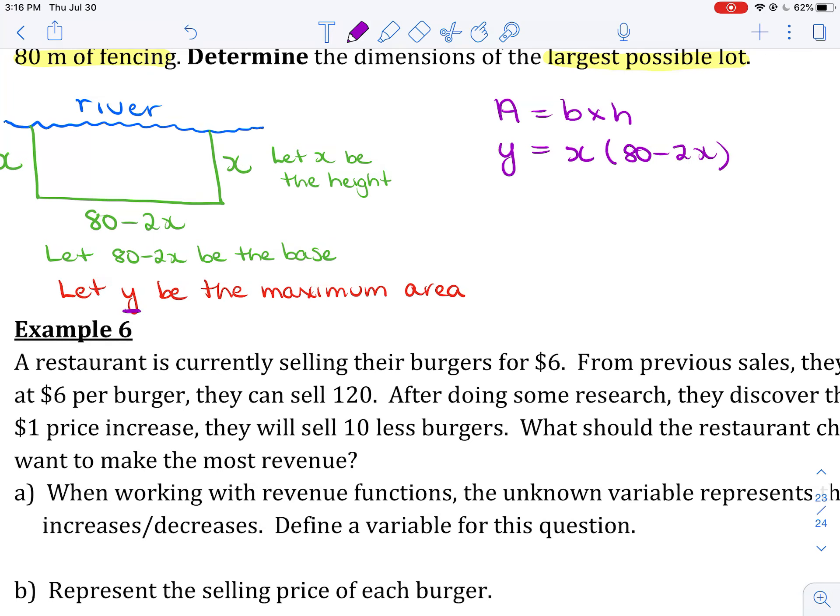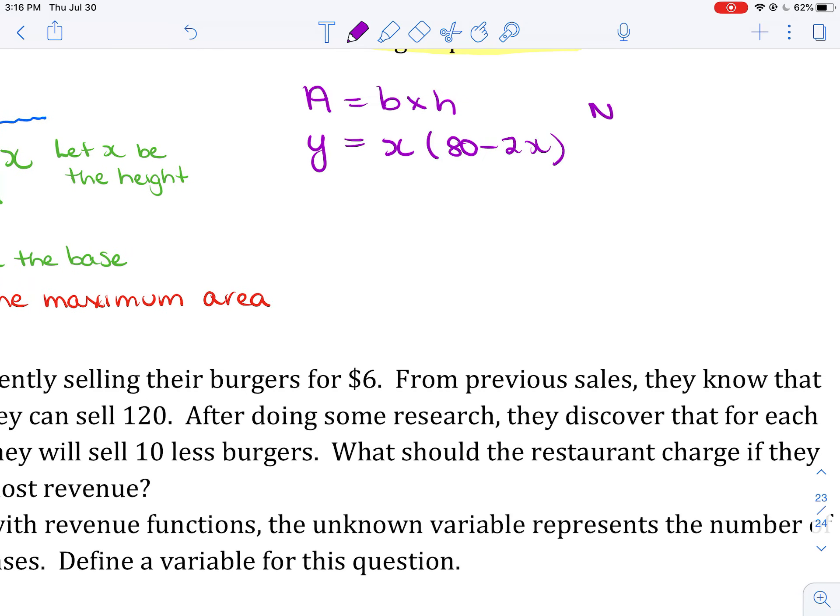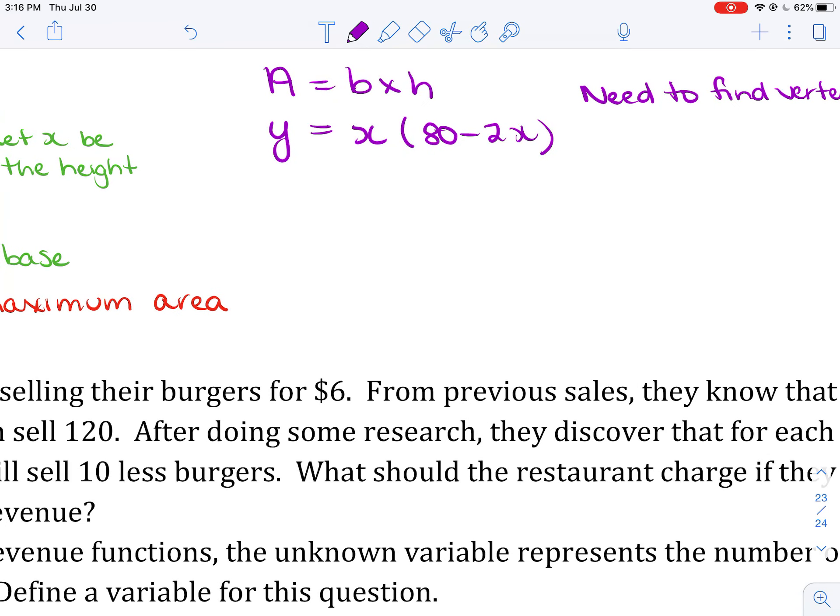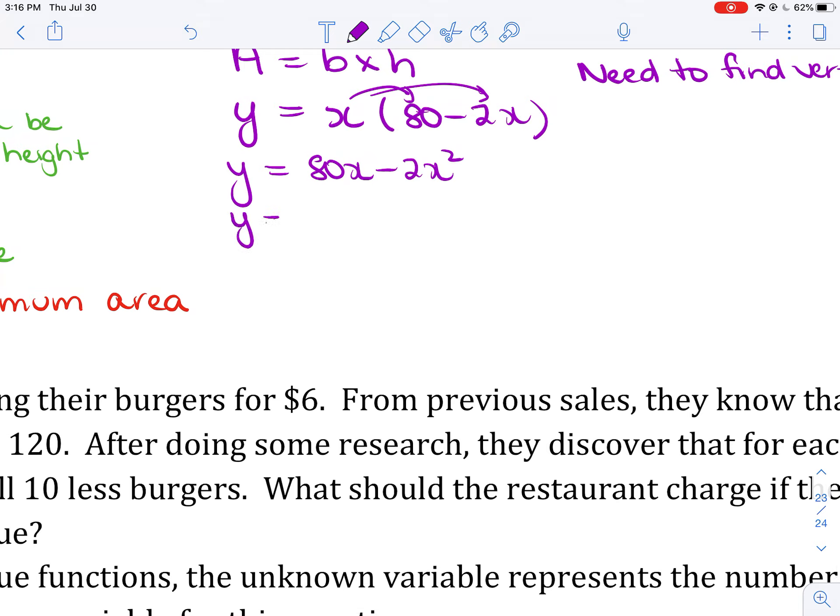Now, just like with all the other questions, I need the vertex. I need to find the vertex. And that means I need to write this in standard or vertex form. So through the brackets goes the x. So y will equal 80x minus 2x squared. I want my x squared to come first. So y equals negative 2x squared plus 80x. If you want a constant of 0 on the end, go ahead and put it there.